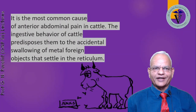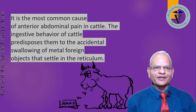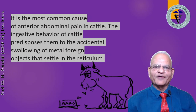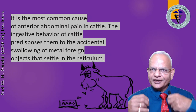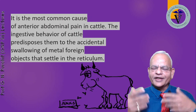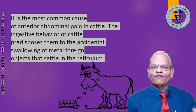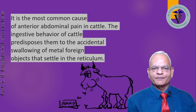So friends, TRP or hardware disease is the most common cause of anterior abdominal pain in cattle. The ingestive behavior of cattle predisposes them to accidental swallowing of metallic foreign objects that settle in the reticulum.